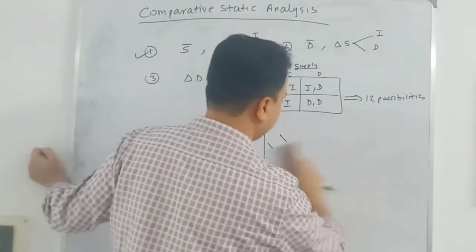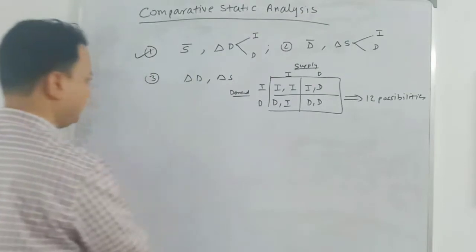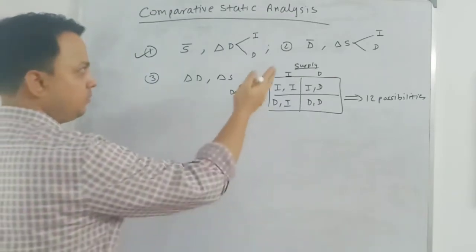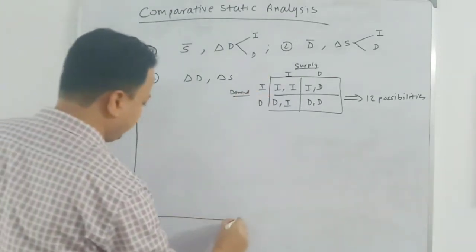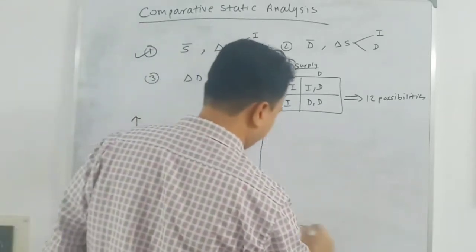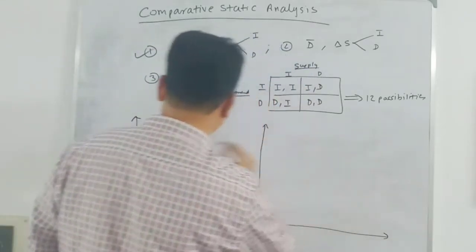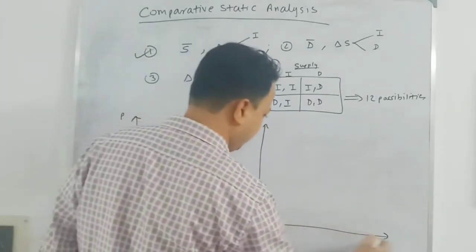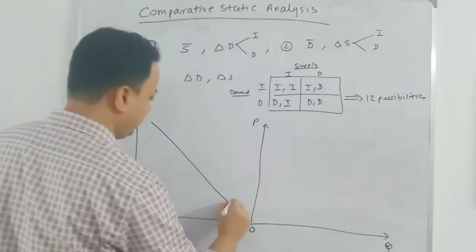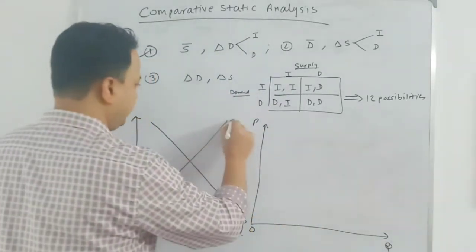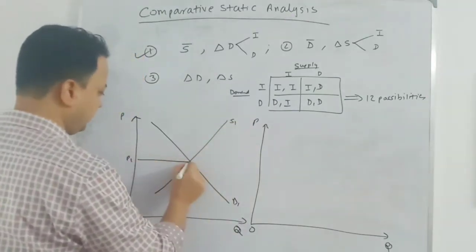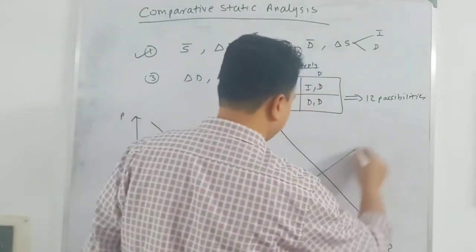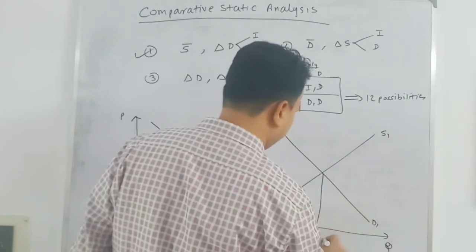Second case: the demand curve is given and the supply curve changes. I have two possibilities. Drawing the axes with price on the vertical and quantity on the horizontal, D1 is my initial demand curve and S1 is my initial supply curve. This is the starting initial equilibrium price and quantity, Q1, P1.